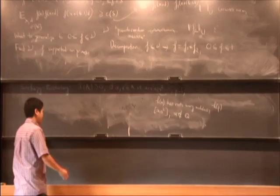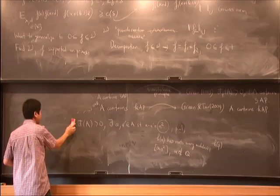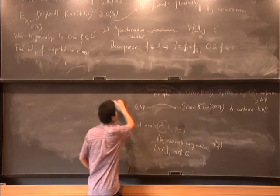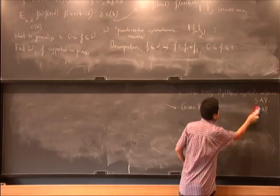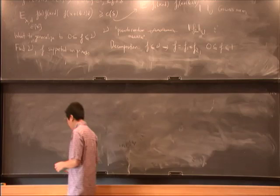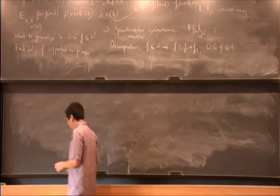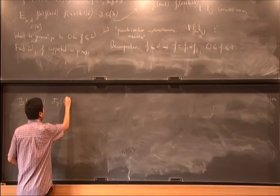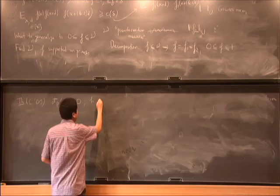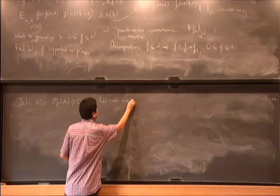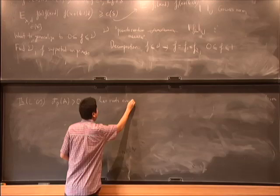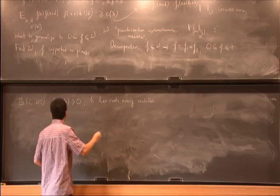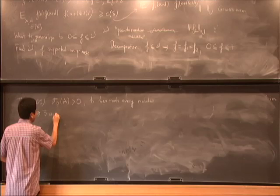So this is the machinery that Green and Tao devised to find arithmetic progressions inside the primes. So in view of the method, it's natural to ask for other linear configurations, and not linear but additive structures inside the primes. So for example, it is a theorem of mine, which is Sarkőzy's theorem for the primes. So if you have a set of positive density and H has the property that it has roots every modulus, then there exist two elements of A whose difference is H of N for some N.